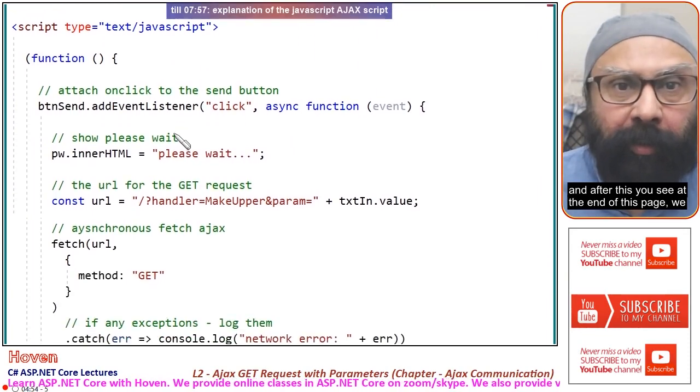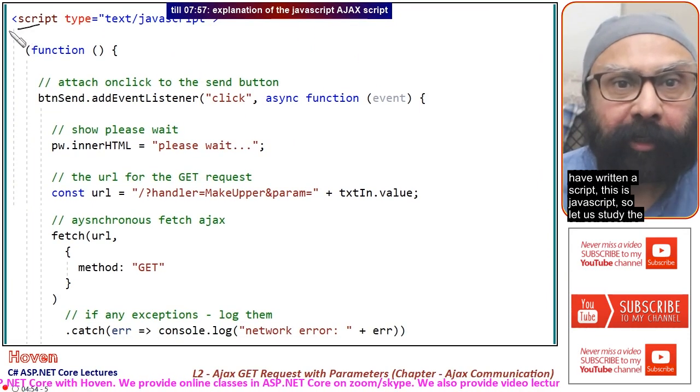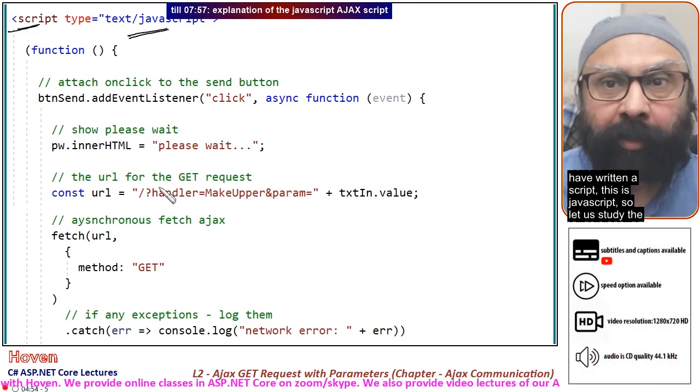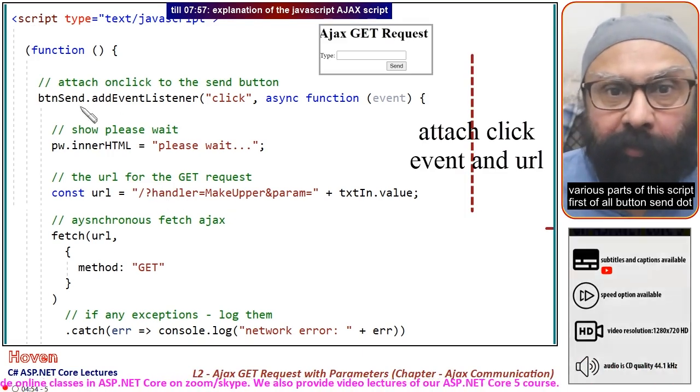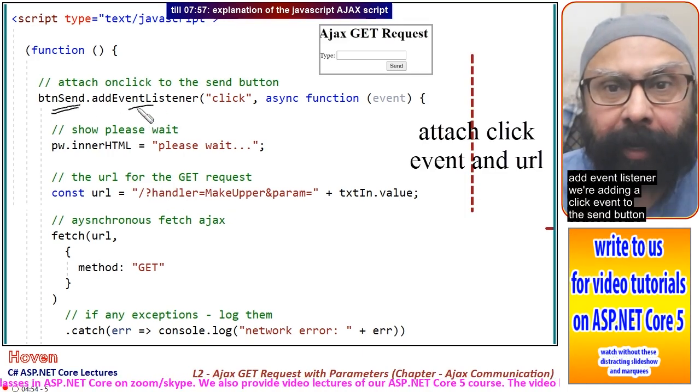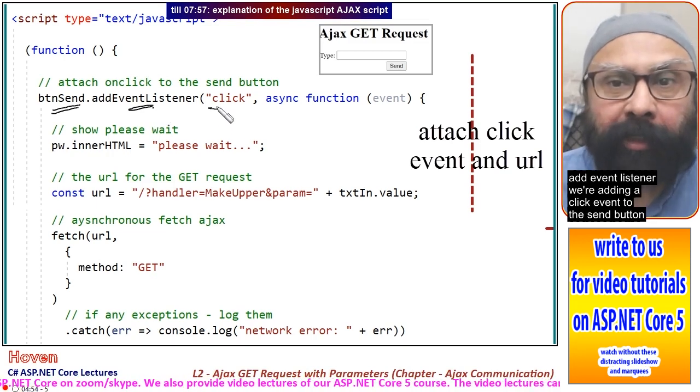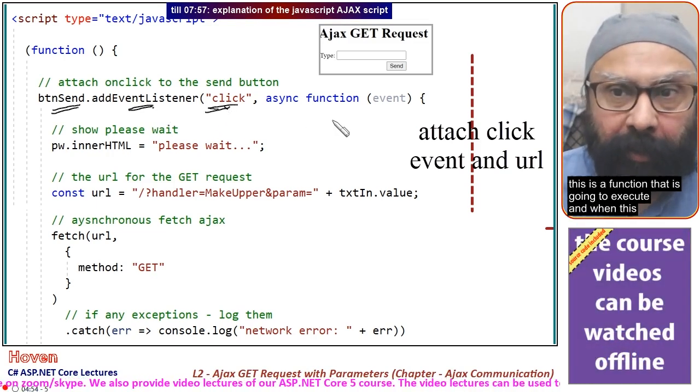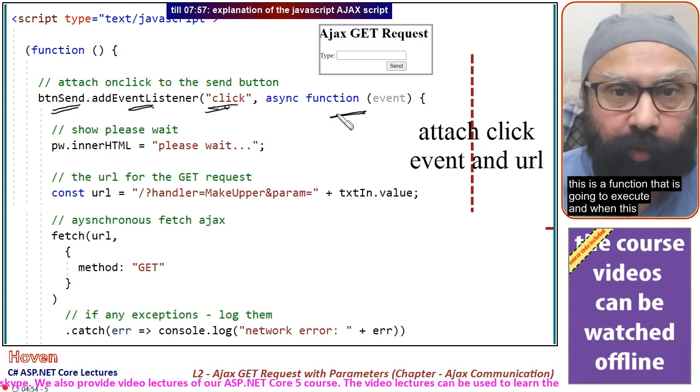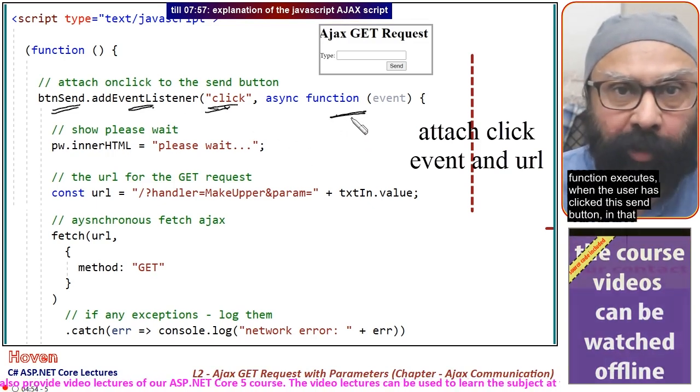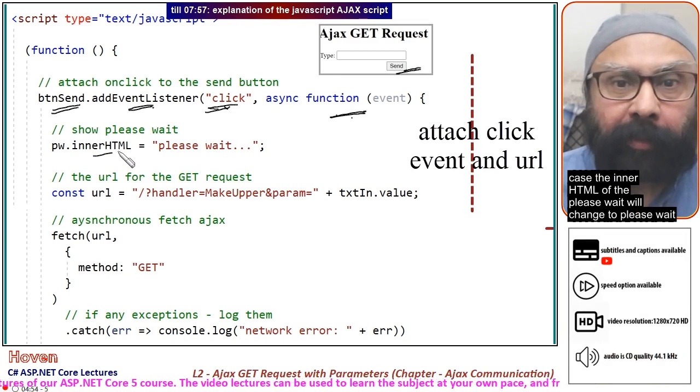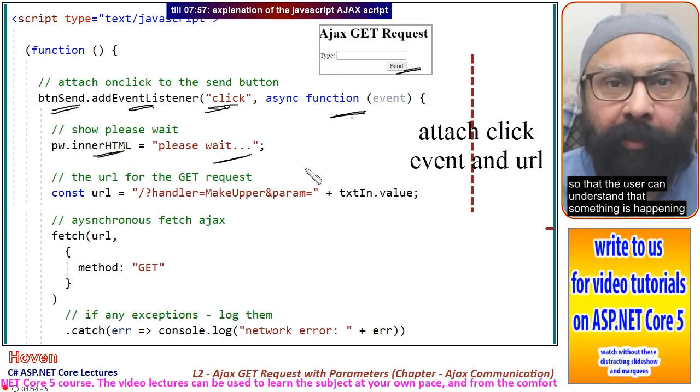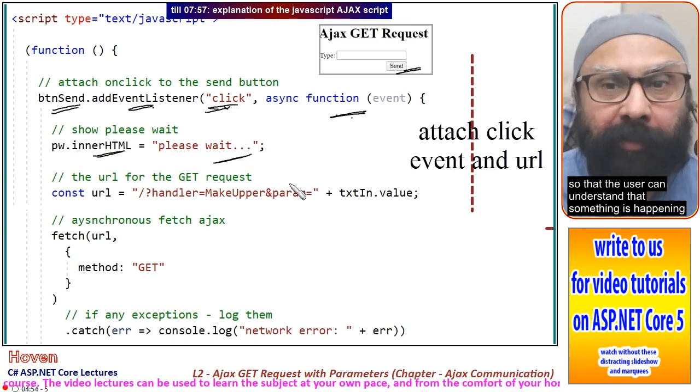At the end of this page we have written a script. Let's study the various parts. First, we're adding a click event listener to the send button. When the user clicks this button, the inner HTML of please wait will change so the user understands something is happening.